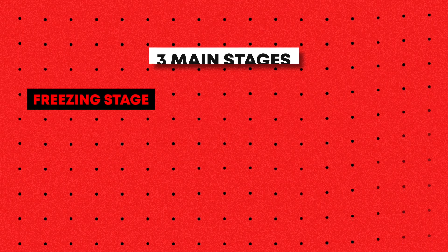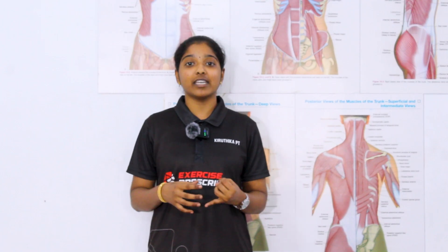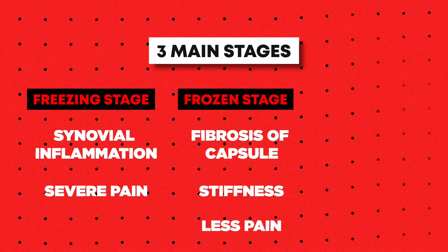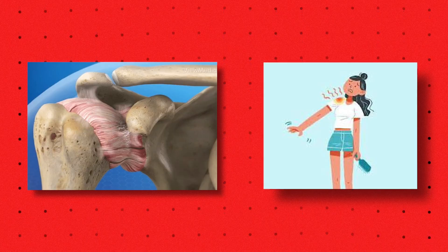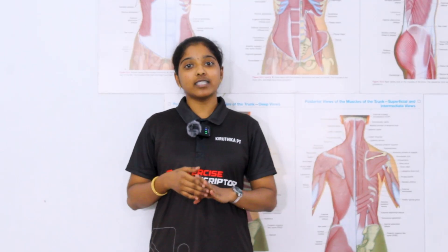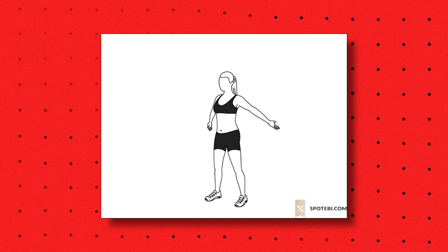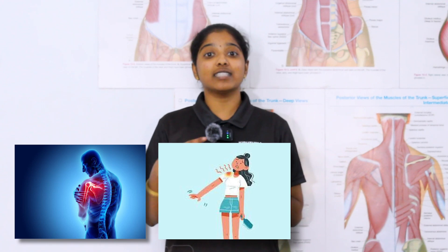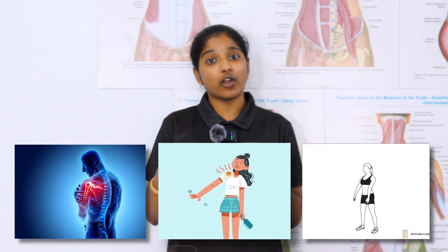Adhesive Capsulitis has three main stages. The first is the freezing or painful stage, characterized by synovial inflammation and mainly manifesting pain. The second is the frozen or stiffness stage, characterized by fibrosis of the joint capsule, manifesting mainly stiffness with some pain. The third is the thawing or resolution stage, characterized by spontaneous resolution of symptoms — where pain reduces and stiffness gradually resolves.